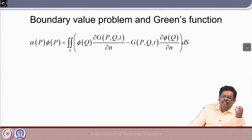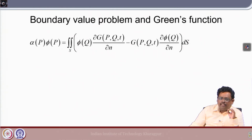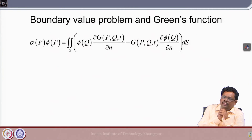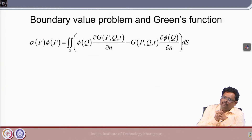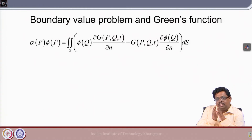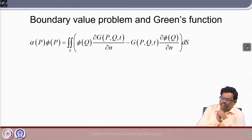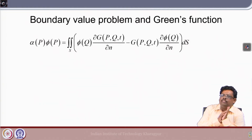From boundary conditions, ∂φ/∂n equals the normal velocity V_n over the body, and we have the kinematic free surface condition. So ∂φ/∂n is somehow known to me. The two main problems boil down to: how to find φ at Q, and how to get G. Today let us try to find how we can get the value of G. We take a very elementary problem where finding the Green's function is straightforward.